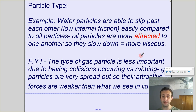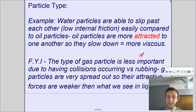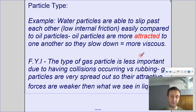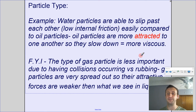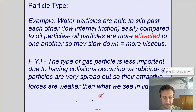For example, water particles slip and slide past each other easily — they have low internal friction. Oil has more attractive forces between molecules, making it harder for particles to slip past each other. For gases, particle type matters less because they are so spread out that the attraction isn't a significant factor — similar to how magnets don't attract as strongly when they're far apart.